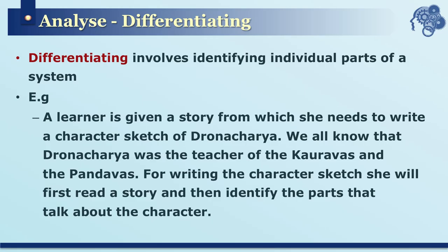Differentiating involves identifying different parts of an entire system. For example, if a learner is given a story and asked to write the character sketch of Dronacharya — a teacher of the Kauravas and Pandavas — they must first read the story and identify instances or events related to Dronacharya. When they do that, the cognitive process happening in their mind is differentiating.